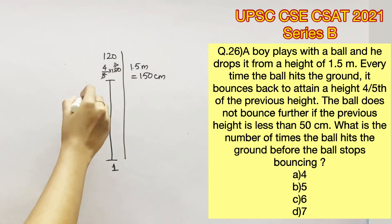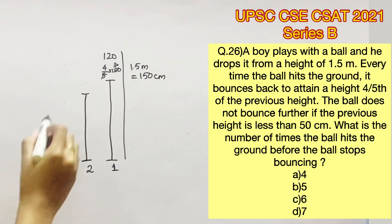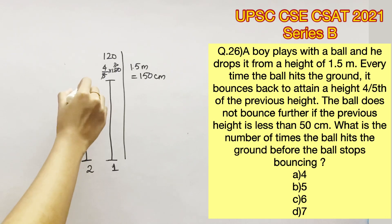So it has attained a height of 120 centimeters now. Now it comes back to the ground. Let's say this is the second hit. Now the ball bounces back to 4/5 of 120. So 4/5 into 120 will give us 96 centimeters.